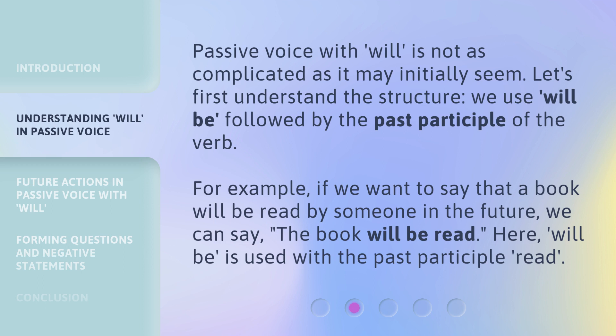We use 'will be' followed by the past participle of the verb. For example, if we want to say that a book will be read by someone in the future, we can say: 'The book will be read.' Here, 'will be' is used with the past participle 'read.'